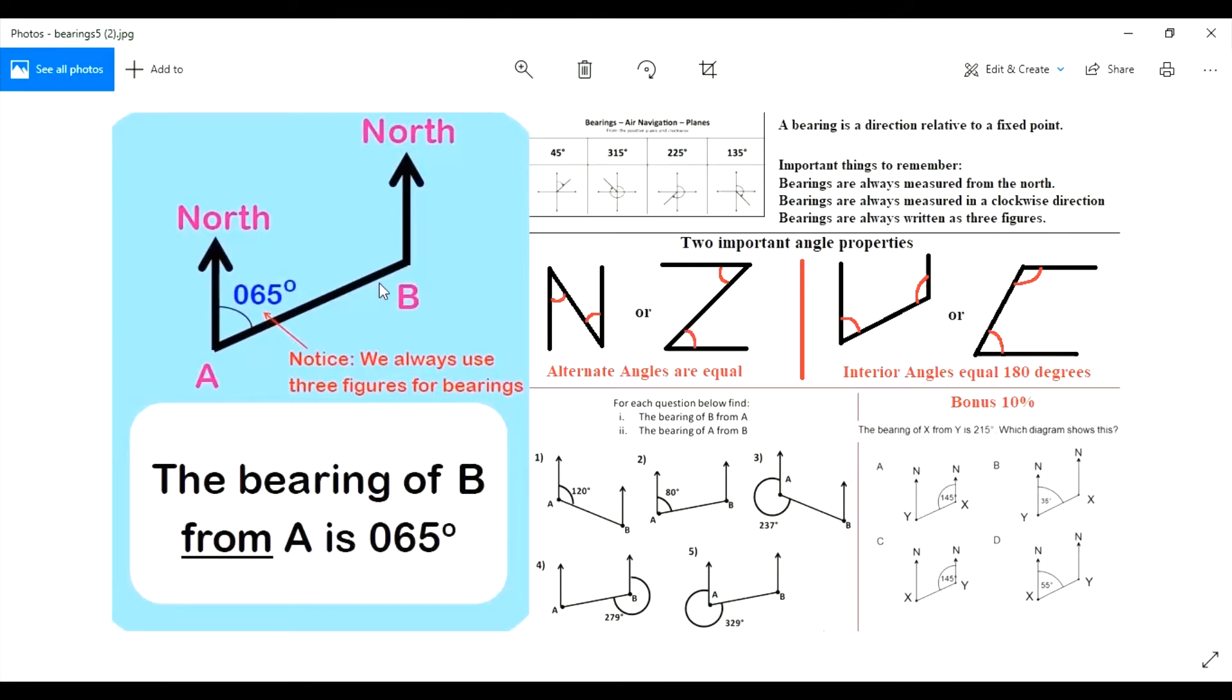Okay, so this one you cannot avoid: you must start from the north and you must go in a clockwise direction. That one Mr. Taylor will not let you off. If you start measuring in a different direction, you're going to get it wrong. But if you put two digits instead of three, I will not mark you wrong.